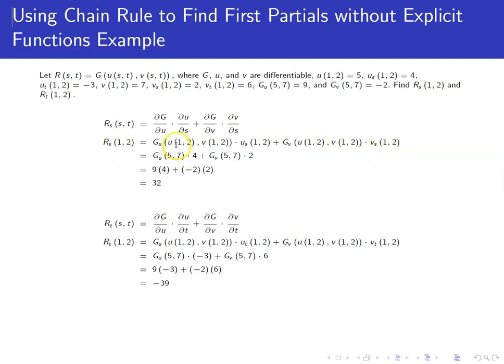Okay, so now I notice U of (1,2) is given to us as 5 and V of (1,2) is given to us as 7. So I replace this inside these parentheses with just (5,7). And do the same thing in the second term. We also know that the partial of U with respect to S at (1,2) is 4, and the partial of V with respect to S at (1,2) is 2. So I can replace those numbers as well.